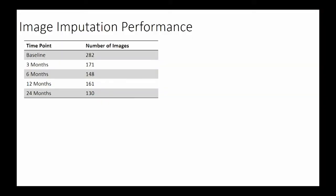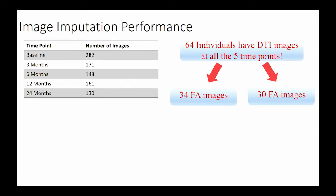Now let me show you the performance of image imputation. This is the baseline image data. Only at baseline we have all the images, and the missing rate at all other time points is about 50%. In our imputation test, we first extract 64 individuals who have data at all five time points. Then we split them into training and test datasets. In the training dataset, we have 34 FA images. In the test dataset, we have 30 FA images. We do 3D FPCA and matrix completion.